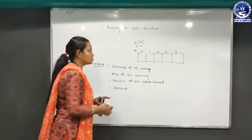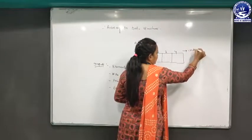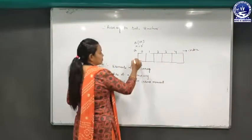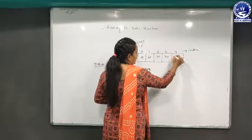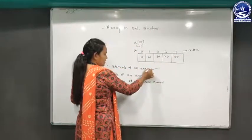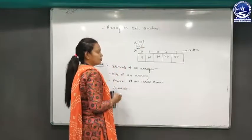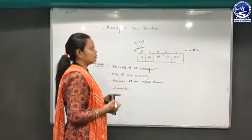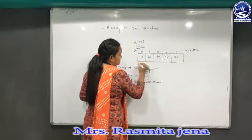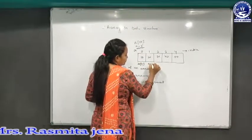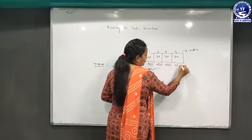Suppose this is the array with elements 10, 20, 30, 40, and 50 at indices a[0], a[1], a[2], a[3], and a[4]. The size of the array is N equals 5, meaning this array stores a maximum of 5 elements.